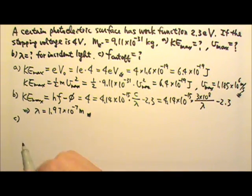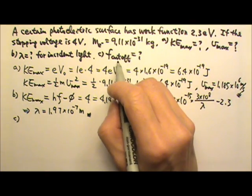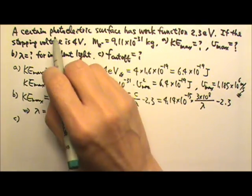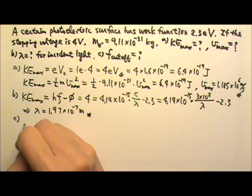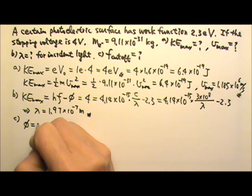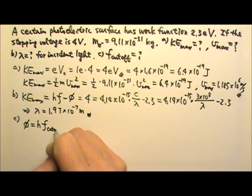Part c: find the cutoff frequency. The cutoff frequency is a property of the photoelectric surface related to the work function. Work function φ = hf, where f is the cutoff frequency.